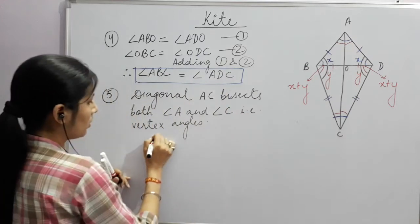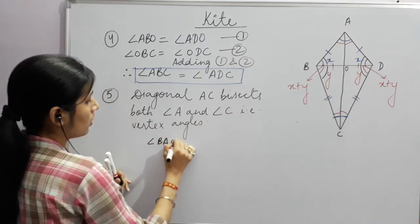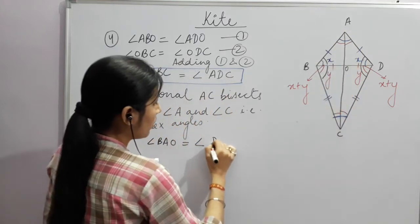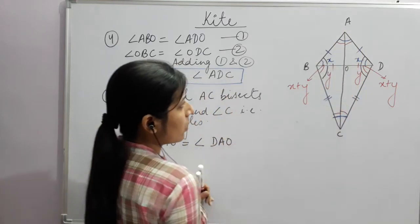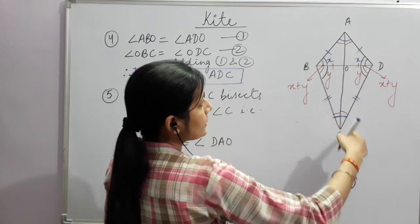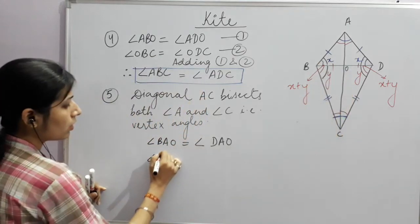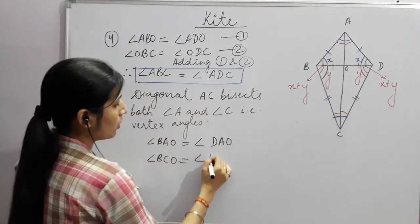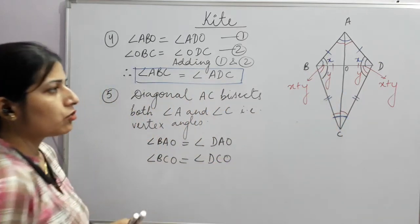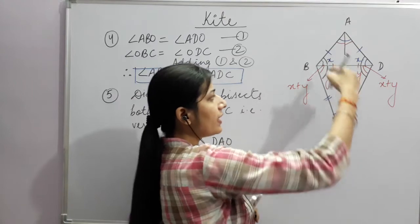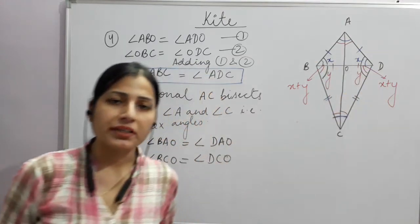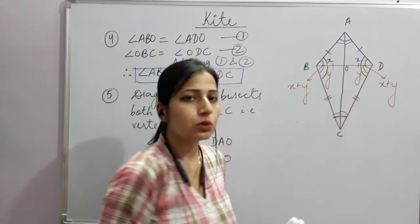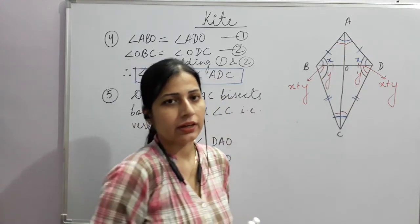So we write: angle BAO = angle DAO, and angle BCO = angle DCO. Diagonal AC bisects both vertex angles A and C.